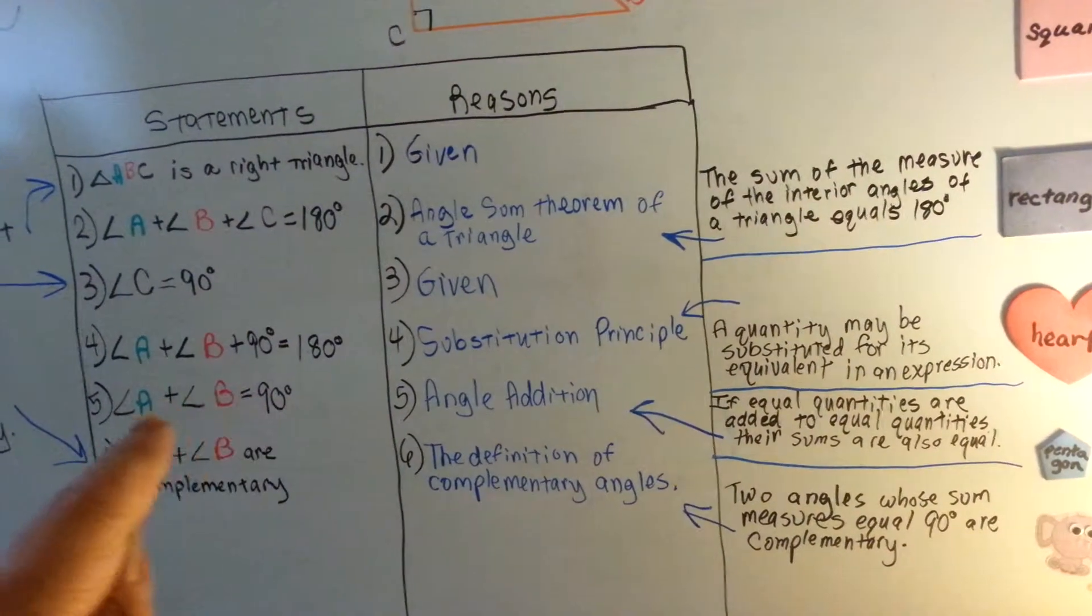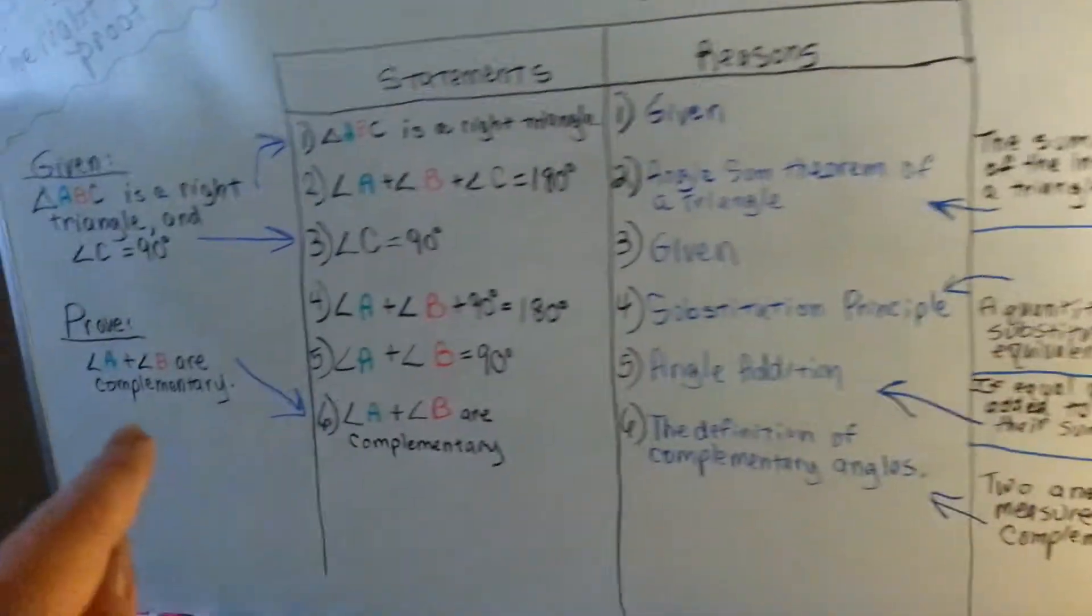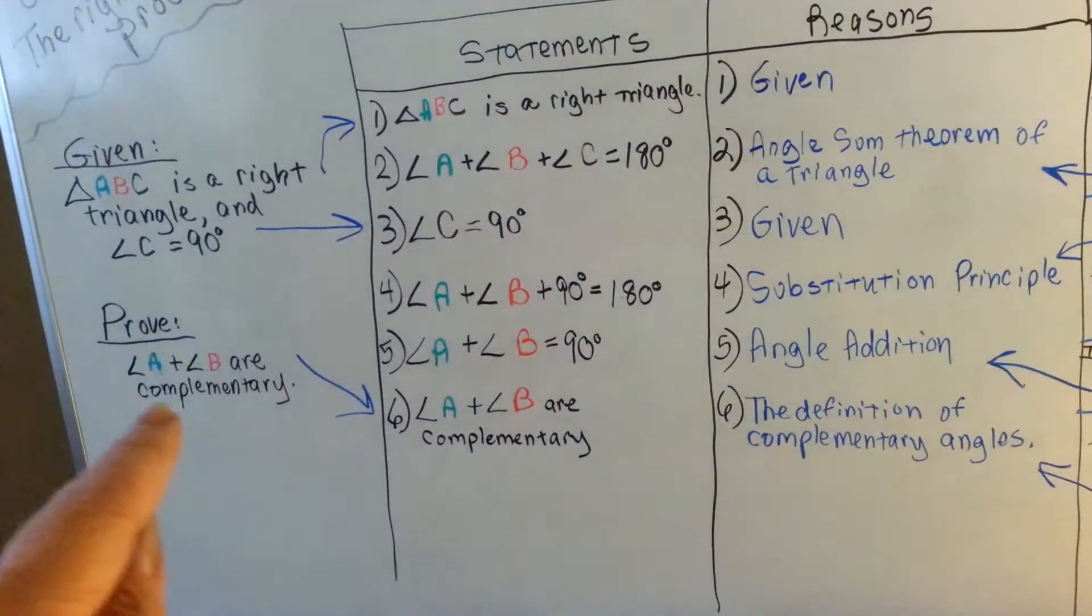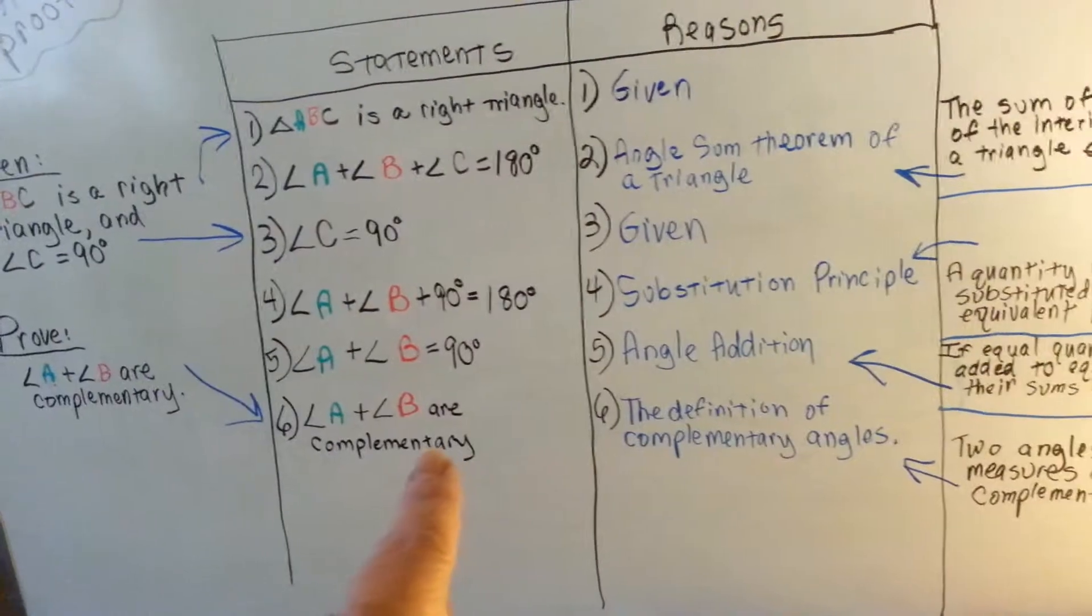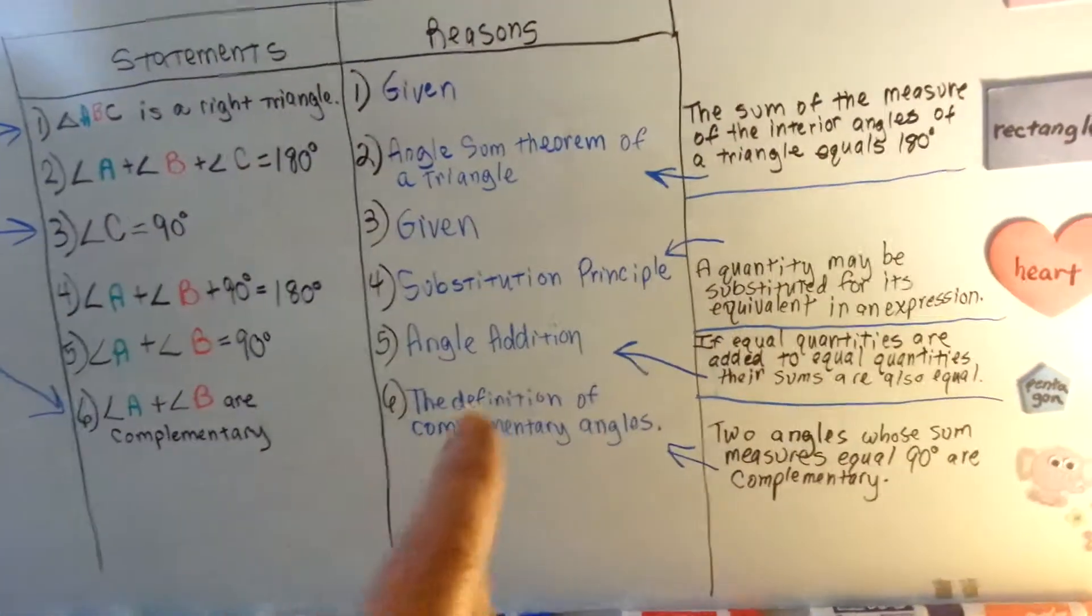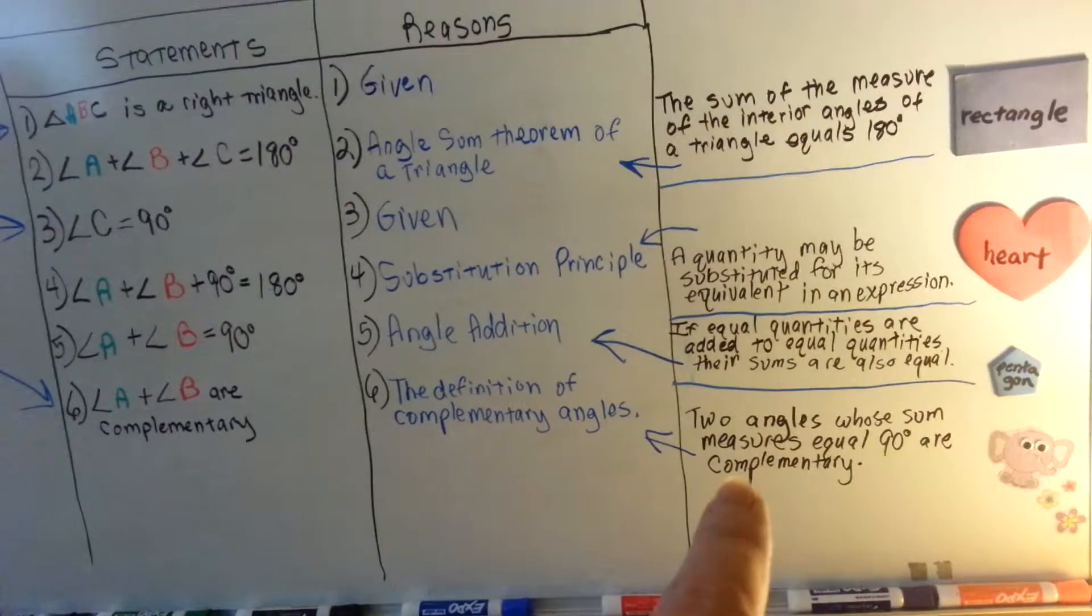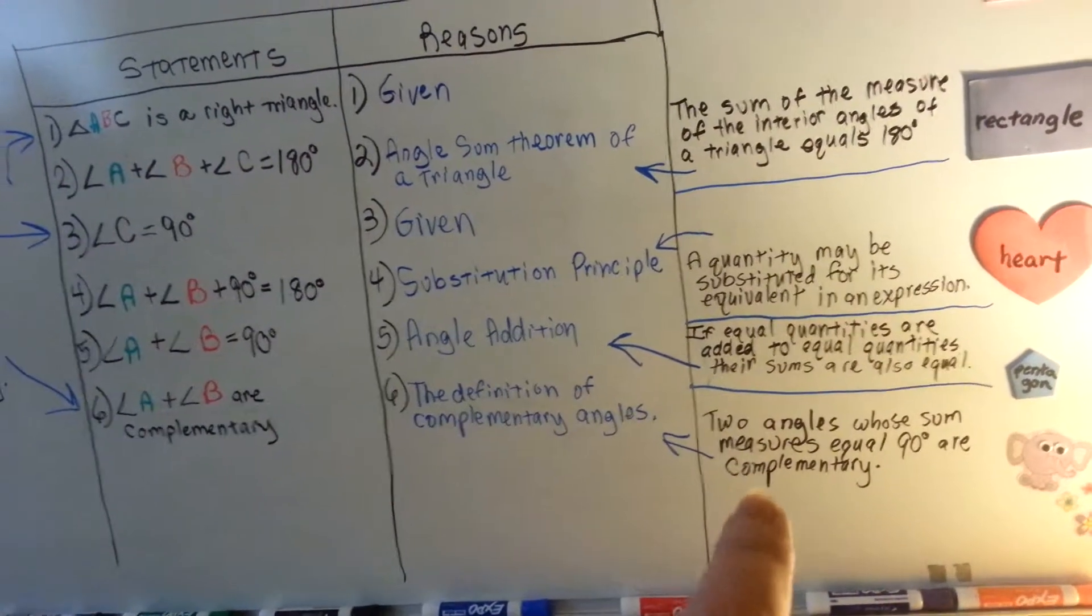If that's 90, then these have to be 90 to make the 180, right? So now here's our prove that we were trying to prove that A and B are complementary. So now we can state that and our reasoning is the definition of complementary angles. Two angles whose sums measure equal 90 are complementary.